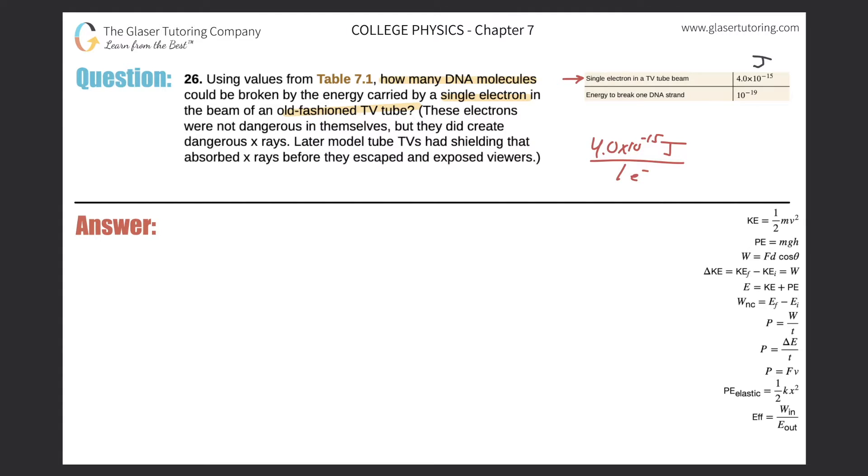And this value here would represent 10 raised to the negative 19 joules per single DNA strand, per one DNA strand.